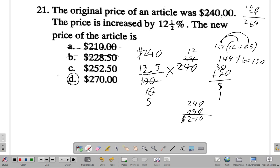It wasn't 10%. It was more than 10% increase. So, it should be more than 264. So, it can't be 252.5 either. It has to be more than 264, which is 270.